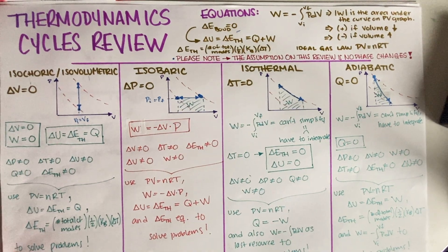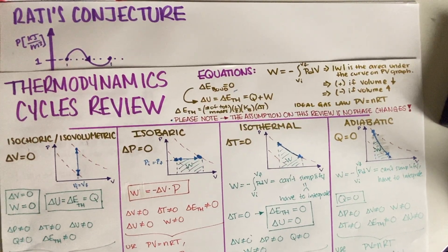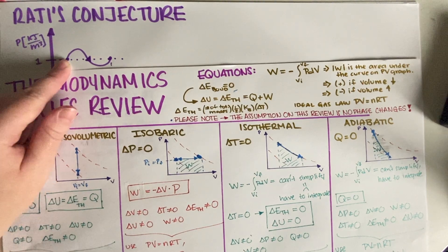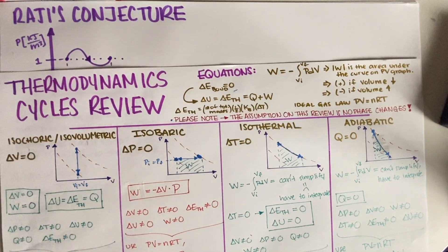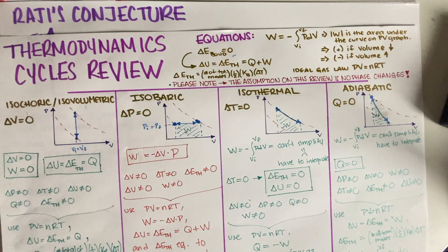The only one that it sort of resembles is isobaric, because delta P is equal to zero. If you look at the initial state, which is this one, and the final state, which is this one, delta P doesn't really change. It's equal to zero. However, isobaric, by definition, is not that delta P is equal to zero. The definition of isobaric, per se, is that P doesn't change as you go through the process.